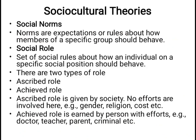Social norms are the expectations and rules about how members of a specific group should behave. Norms are the standards and values that society and culture expect from us as members — to behave and follow standards and rules. These norms and rules are decided according to our social role: the set of social rules which individuals apply on the basis of their specific social position in society.